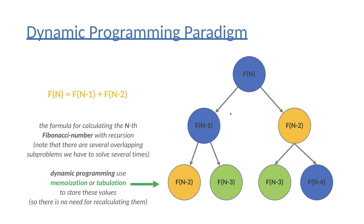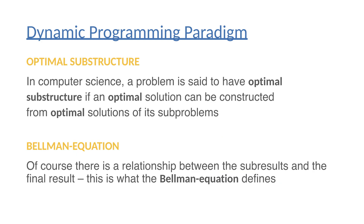For example, if we consider Fibonacci numbers, this is exactly what's happening. If we want to find the nth Fibonacci number, we have to calculate the (n-1)th Fibonacci number plus the (n-2)th Fibonacci number. These subproblems are not independent of each other — there are overlapping subproblems. As you can see by the colors, we keep calculating the same problem over and over again. We can use dynamic programming if the problem has a so-called optimal substructure, meaning an optimal solution can be constructed from optimal subsolutions, and the Bellman equation defines the relationship between subresults and the final result.